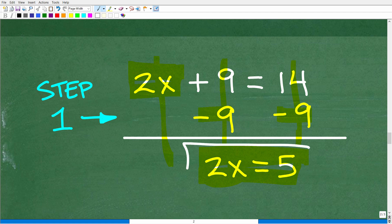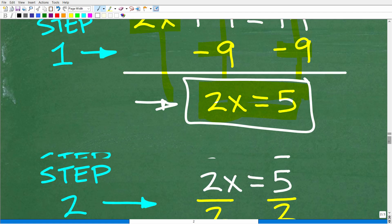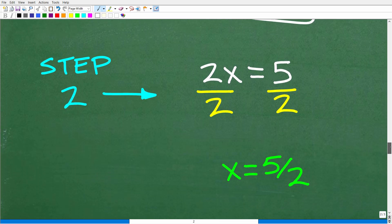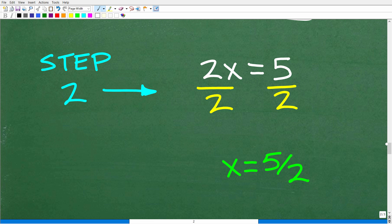And then 14 minus 9 is 5. Alright, so 2x is equal to 5. This is a simple one-step equation. So this is the last step to solve for x. So all we have to do is simply divide both sides of the equation by 2, and then we will have the solution to this equation, which, of course, is x is equal to 5 halves.